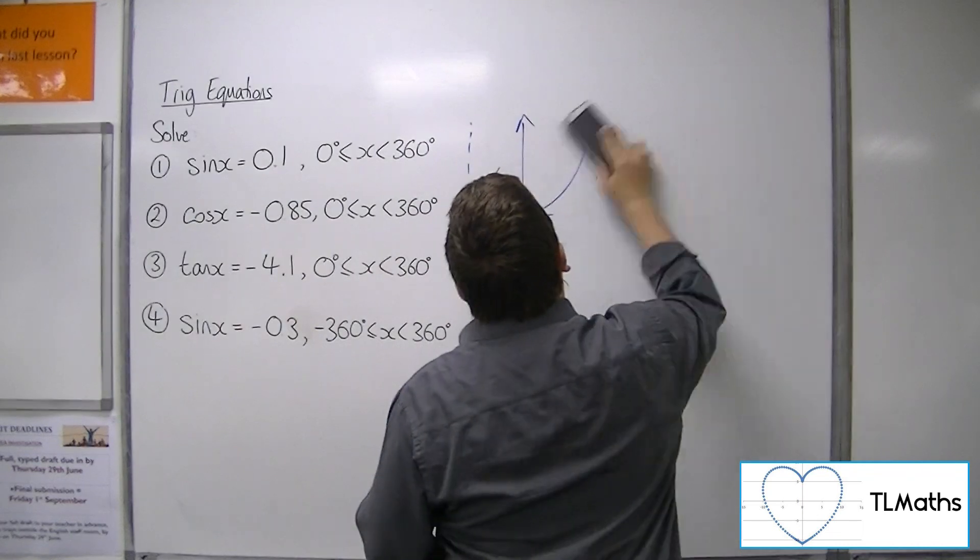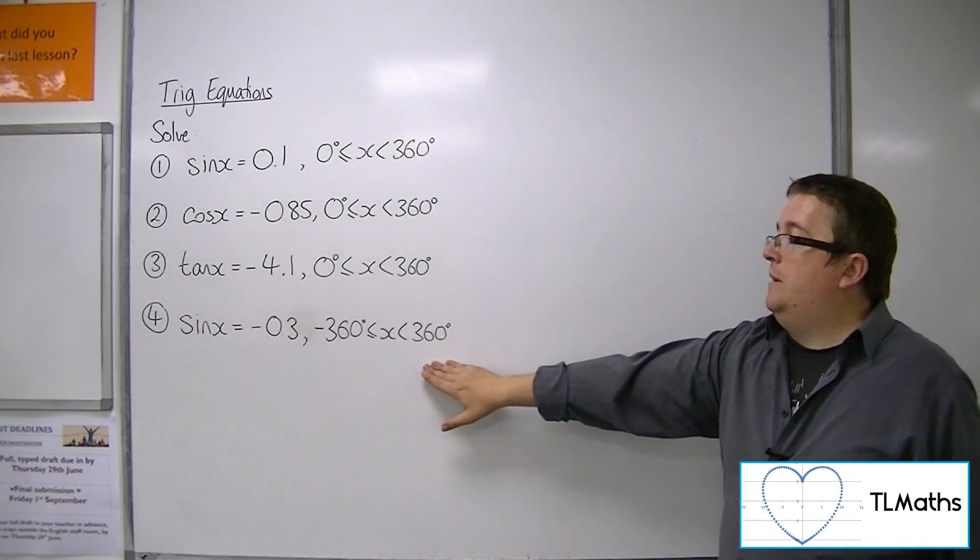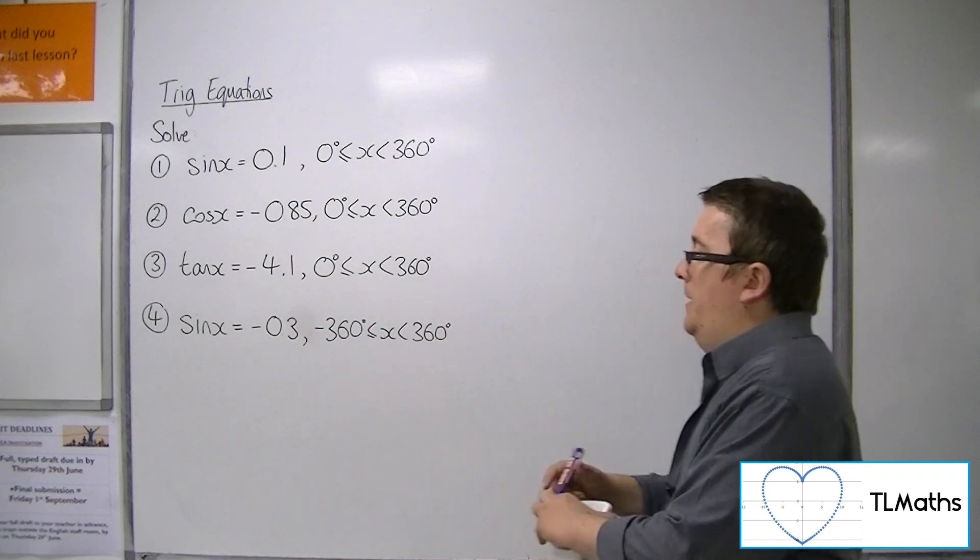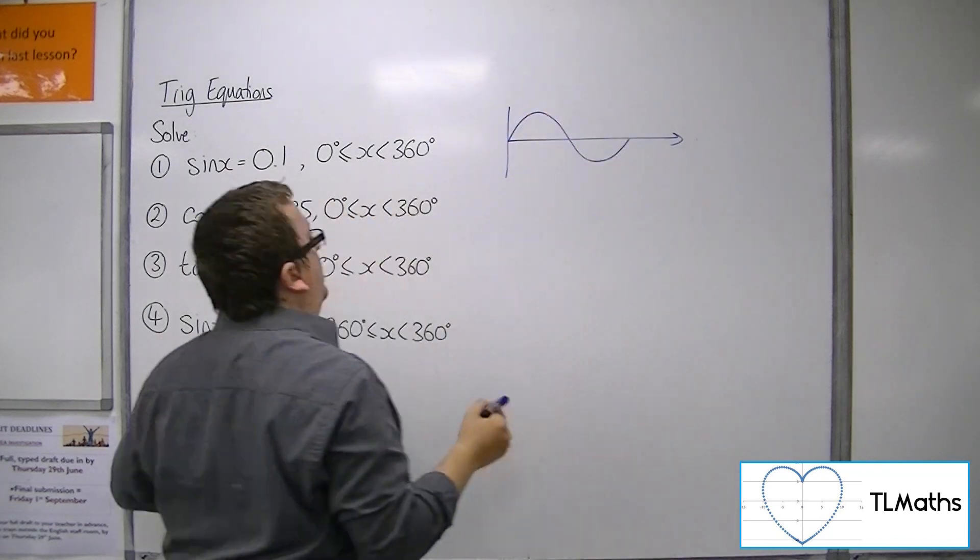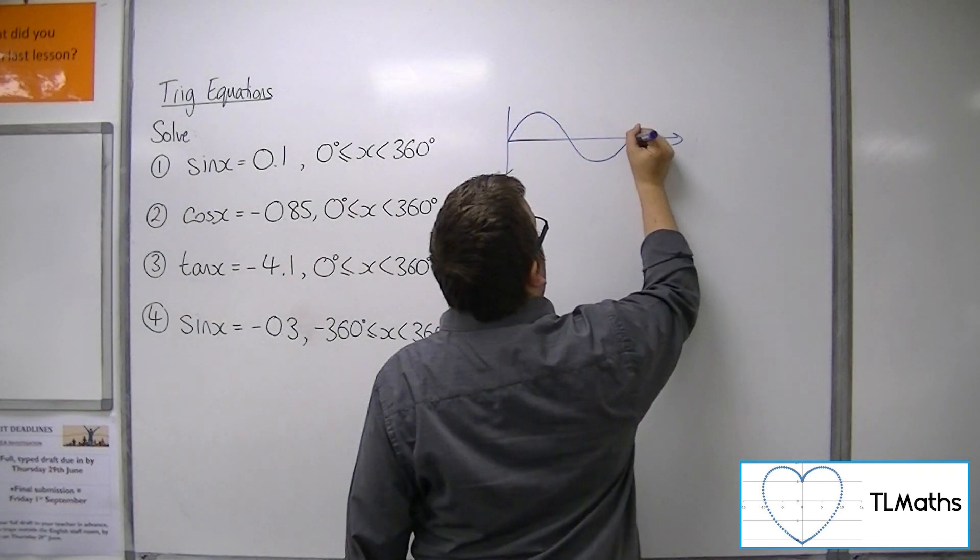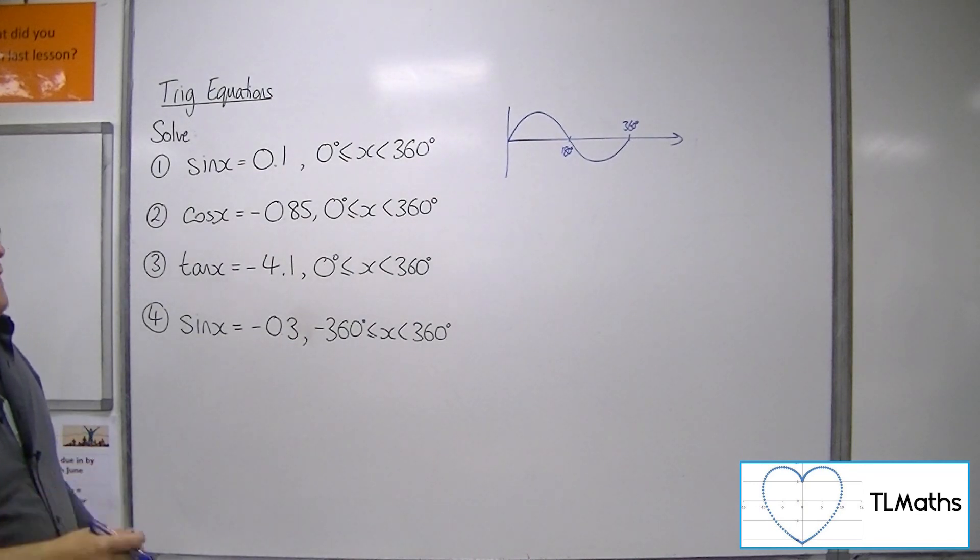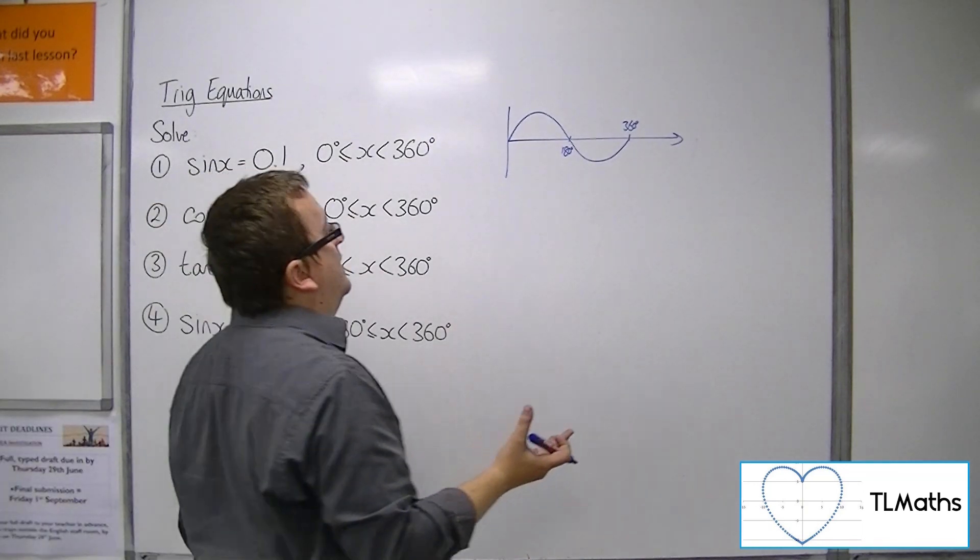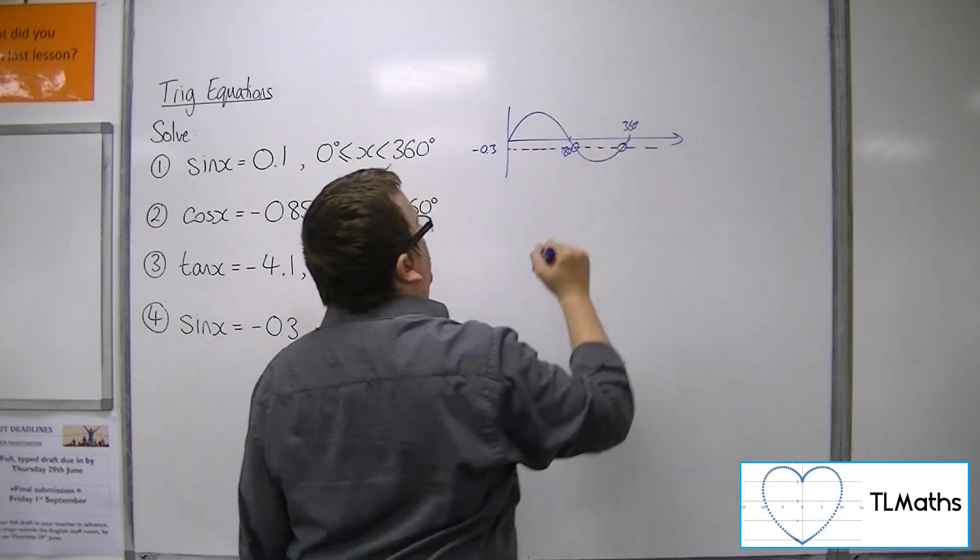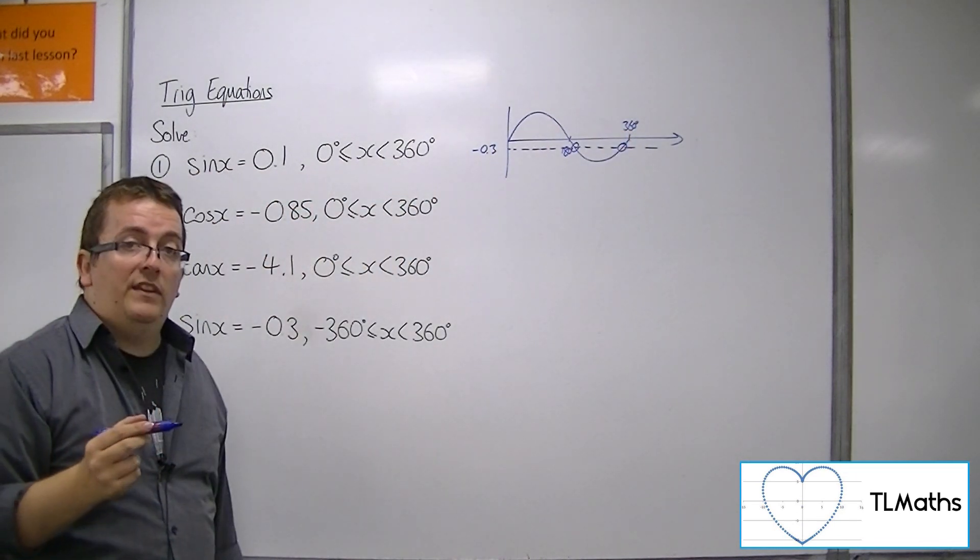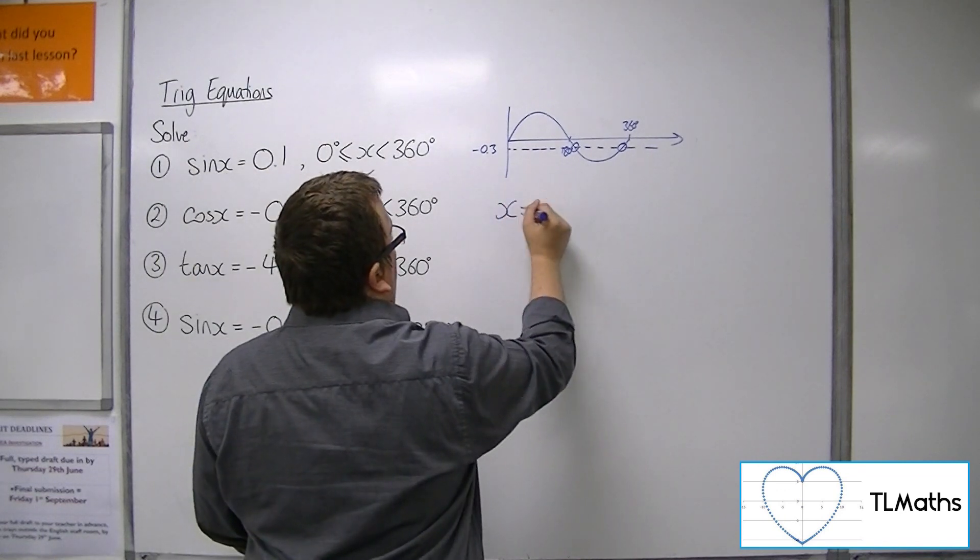Right, now the last one here, I've put it as being between minus 360 and 360. So I'm still only going to sketch sine between 0 and 360. I don't really worry about sketching one that is between minus 360 and 360. So minus 0.3 will be a horizontal line, and we can see that there are two solutions between the 0 and 360 that I want there. I want the solutions between minus 360 and 360.